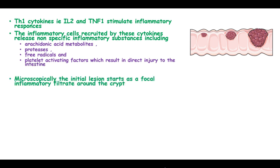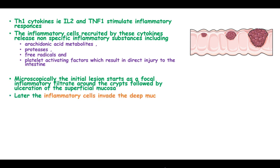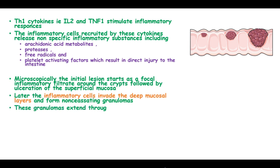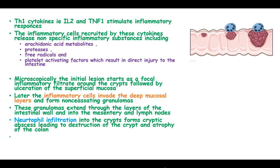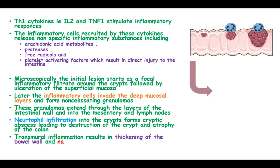Microscopically, the initial lesion starts as a focal inflammatory infiltrate down the crypts, followed by ulceration of the superficial mucosa. Later, the inflammatory cells invade the submucosal layers, forming non-caseating granulomas. These granulomas extend across the intestinal wall to the mesentery and lymph nodes. Neutrophilic infiltration into the crypts forms crypt abscesses, leading to destruction of the crypt and atrophy of the colon.